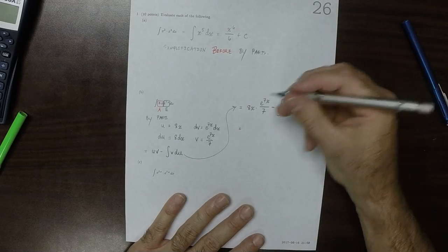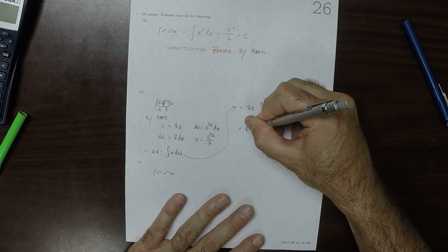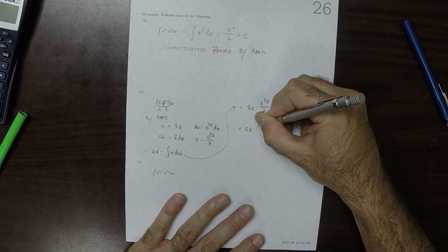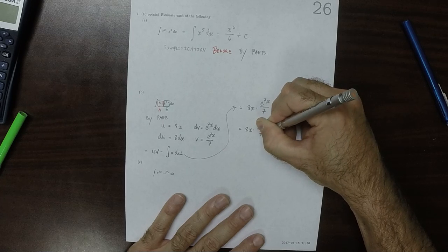So this one would be 8x multiplied by e to 7x over 7.